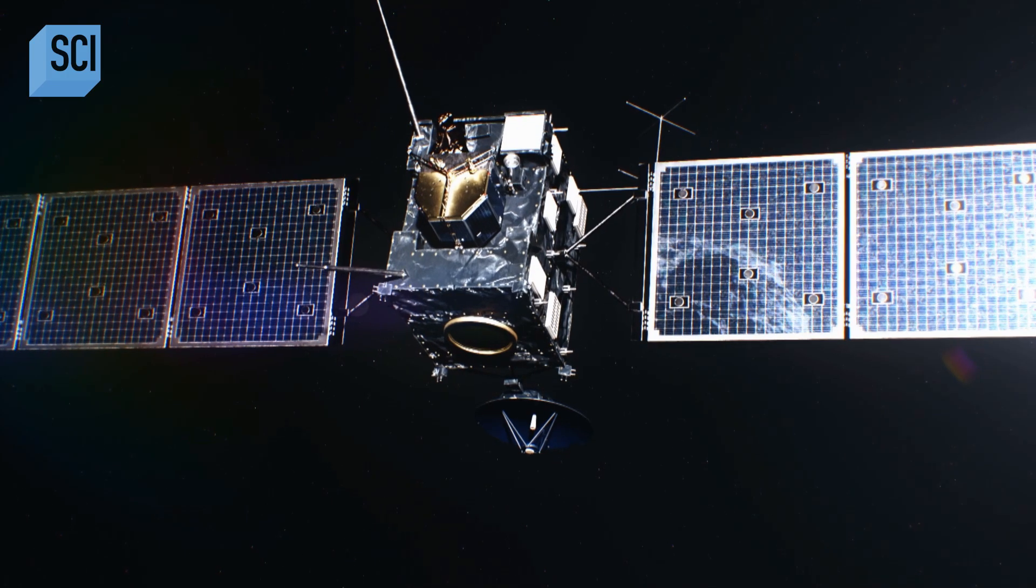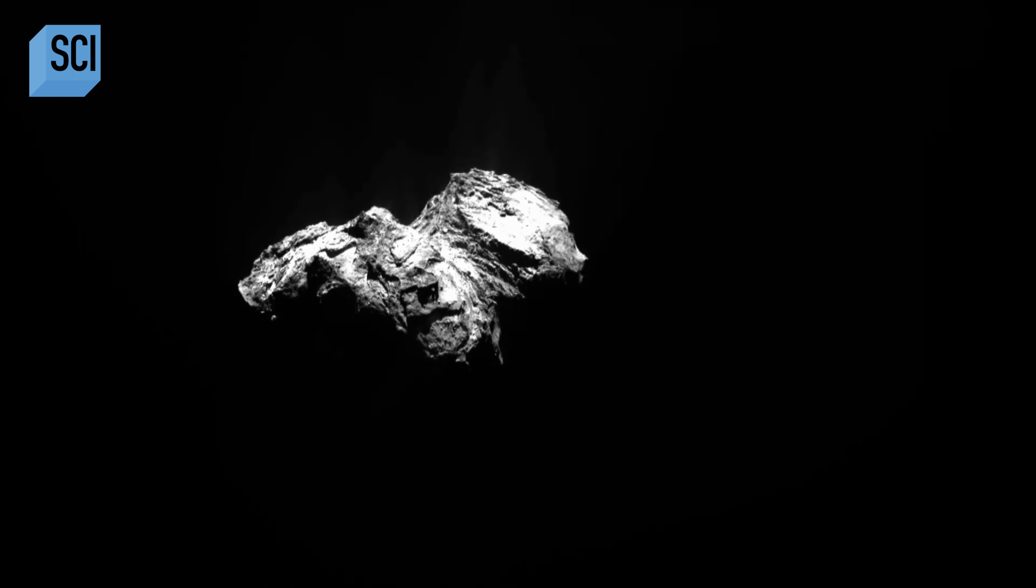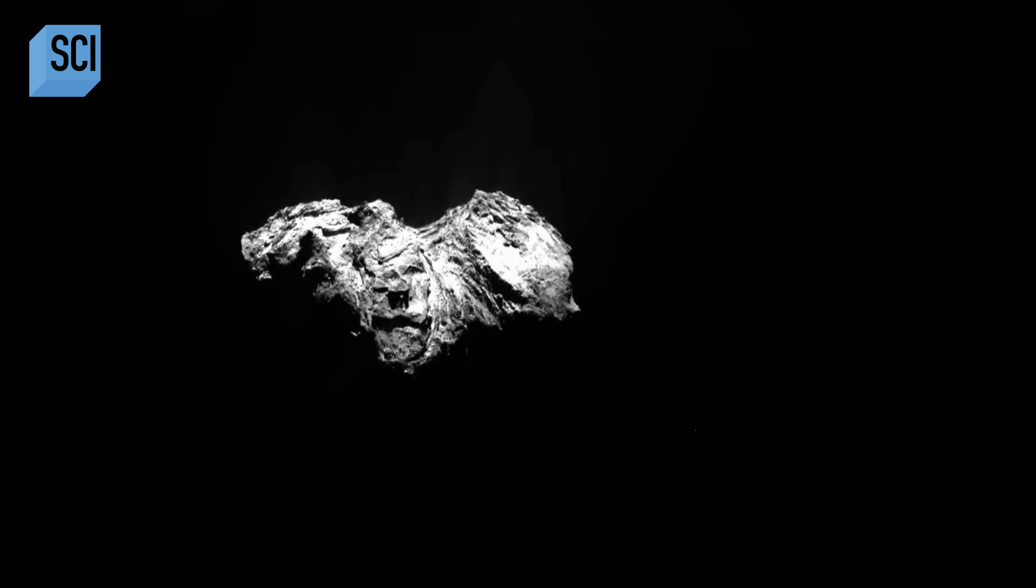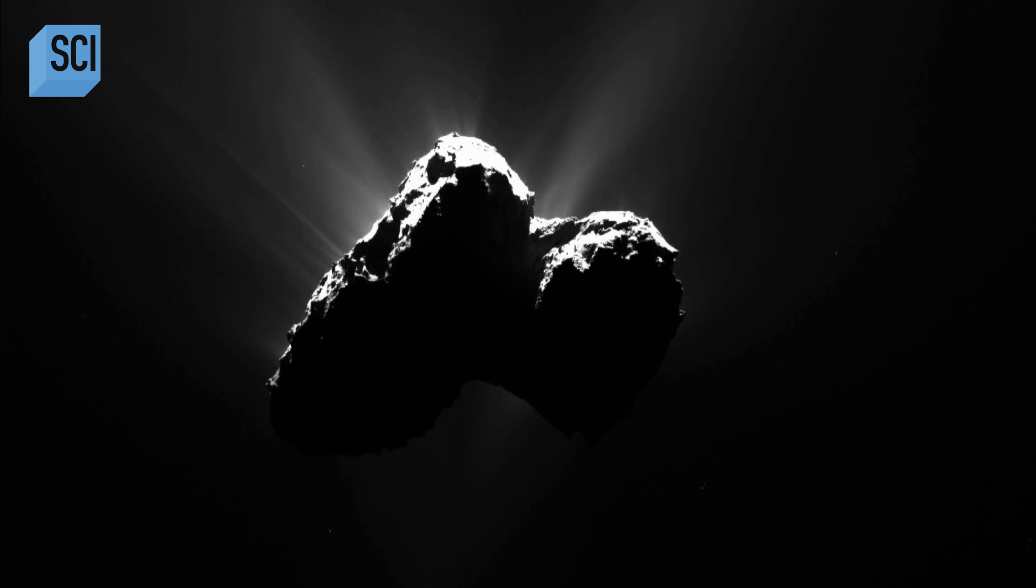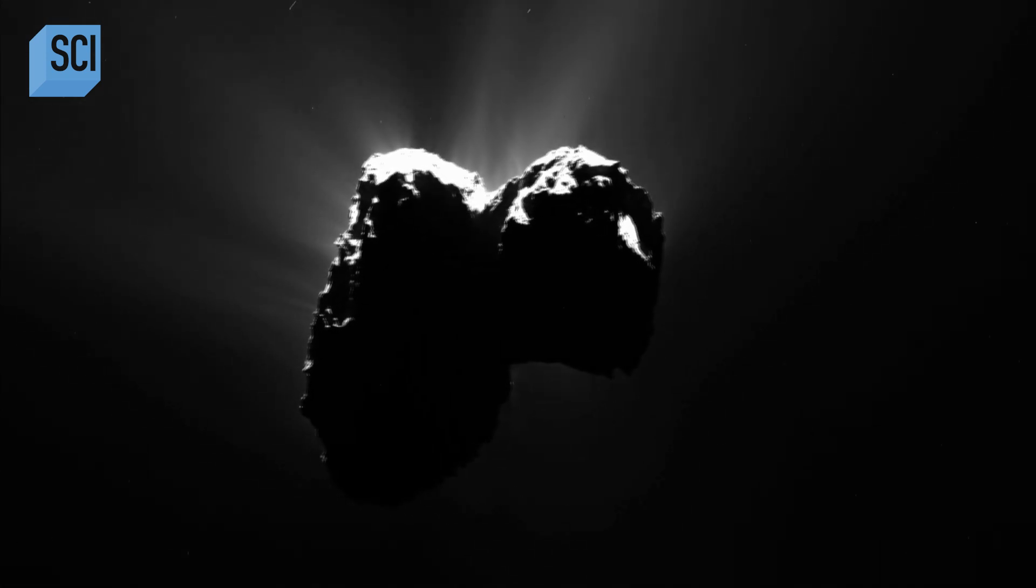Rosetta began to send back images of its target. And after months of seeing a small dot in the distance, the comet slowly came into focus. When I saw this comet, crystal clear, this mountain floating in space of ice and rock, my heart just dropped. They were some of the most dramatic, beautiful images I have ever seen. And then as it got closer and we got to see more and more details on it, that's when things started getting really strange.